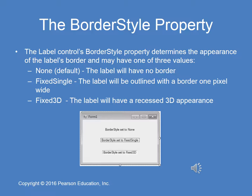The border style property determines the appearance of the border surrounding the label. It can have one of three values: None (the default — no border), Fixed Single (a border one pixel wide), or Fixed 3D (a recessed 3D appearance). Personally I find the 3D appearance more aesthetically desirable than Fixed Single, but once again this is a style preference — we're moving into the creative aspect of programming.